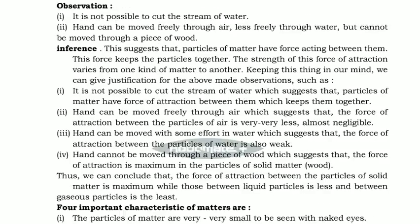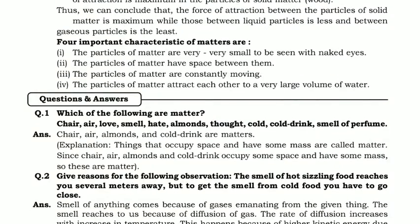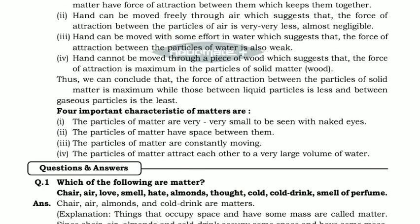So to summarize the main characteristics of matter: particles of matter are very, very small — too small to be seen with the naked eye; particles of matter have space between them; particles of matter are continuously moving; and particles of matter attract each other.